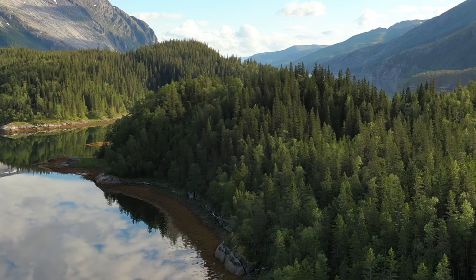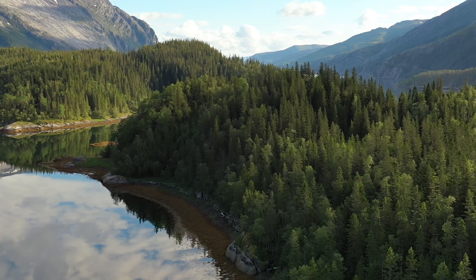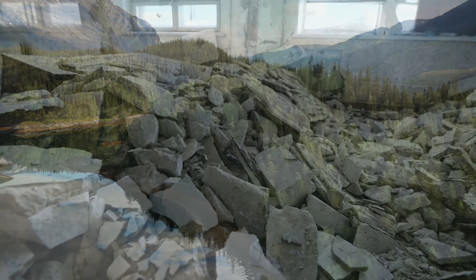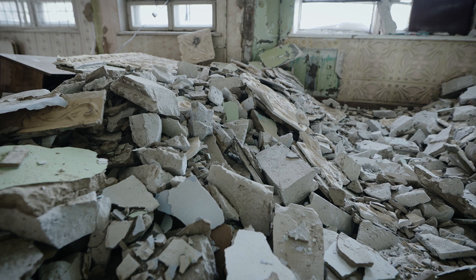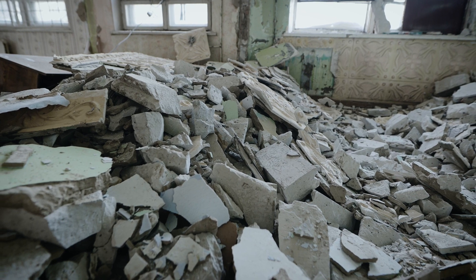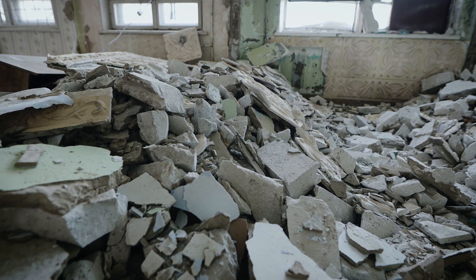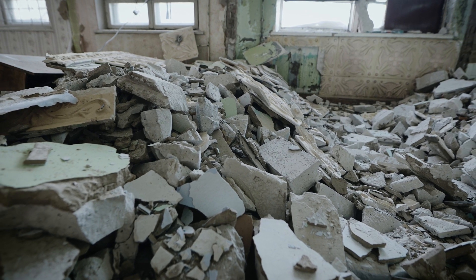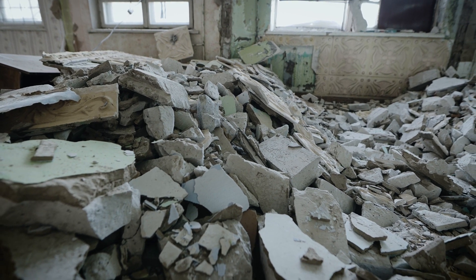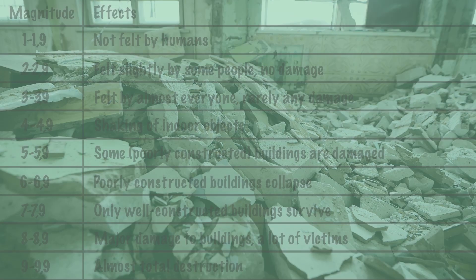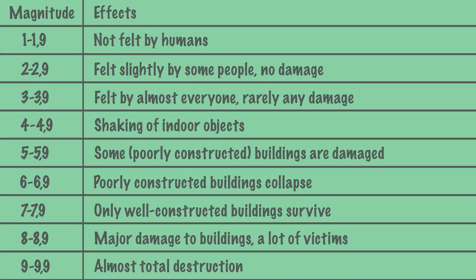Conversely, an earthquake with a small magnitude can still cause damage if it occurs in a poor area where the houses are poorly built, causing them to collapse with possible casualties. In short, the Richter scale measures how much energy is released during an earthquake.